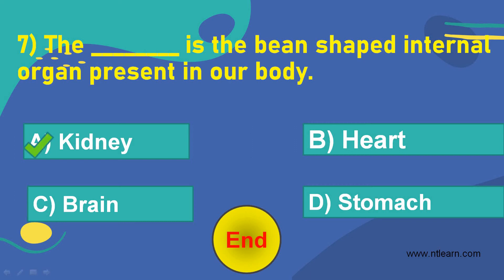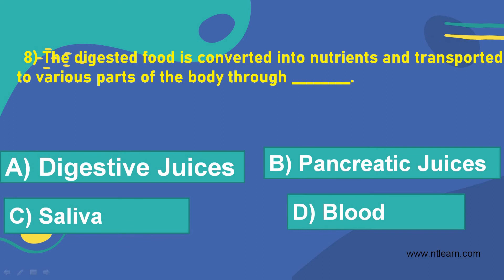Let's move on to the next question. The digested food is converted into nutrients and transported to various parts of the body through dash. Option A, digestive juices. Option B, pancreatic juices. Option C, saliva. Option D, blood.